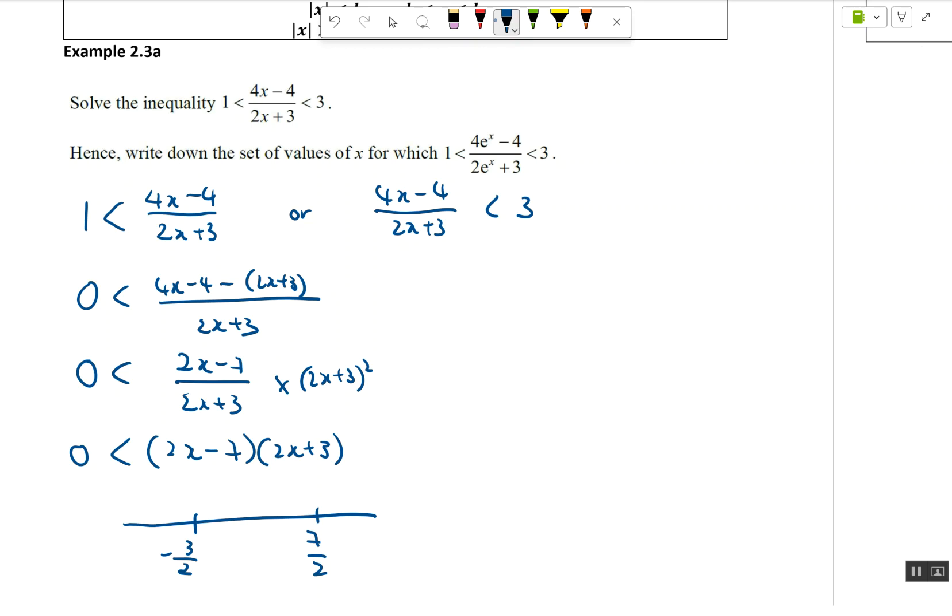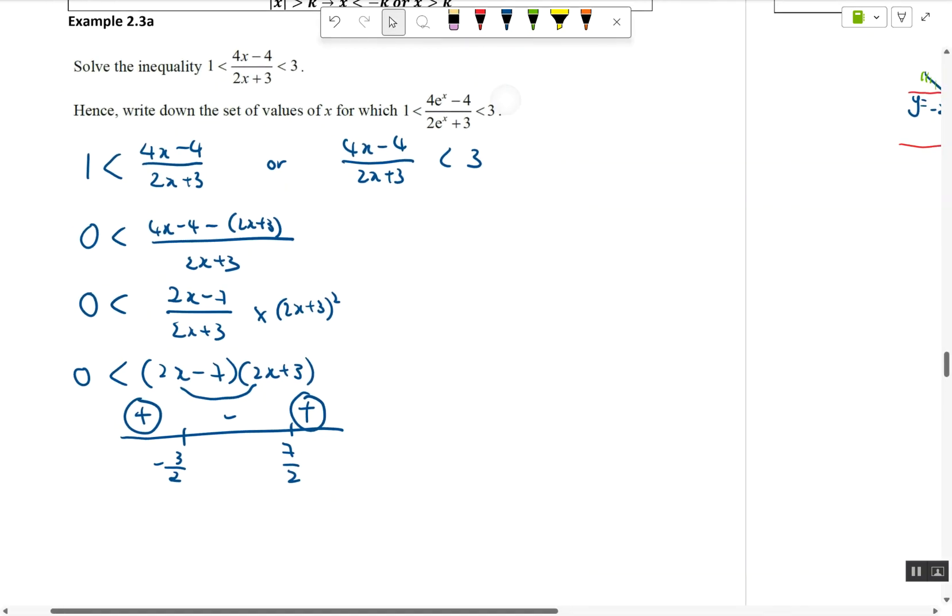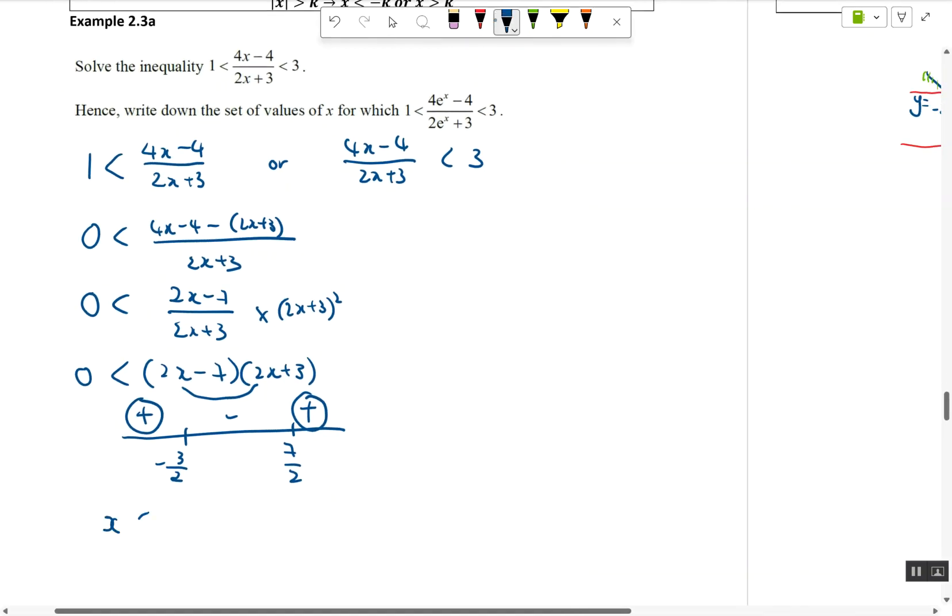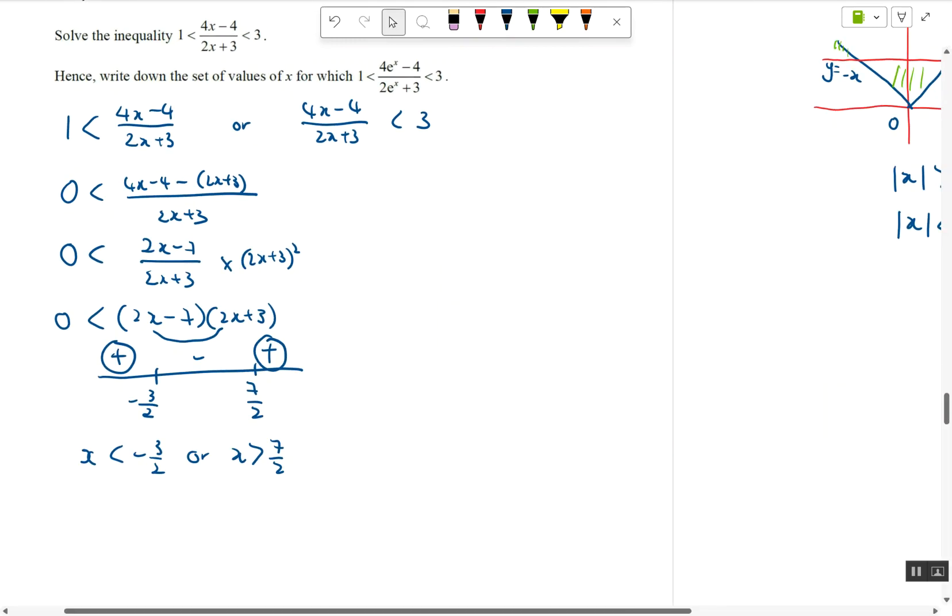Now because it's a positive x squared, plus minus plus, I'm going to take this region or this region. So the first part of the answer is x less than negative 3/2, or x greater than 7/2. You don't actually need to write this down because this is only part of the answer. Later we need to combine into the final answer.